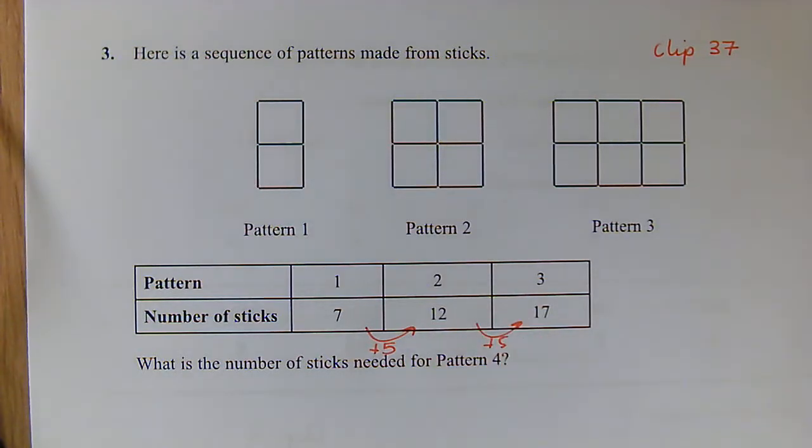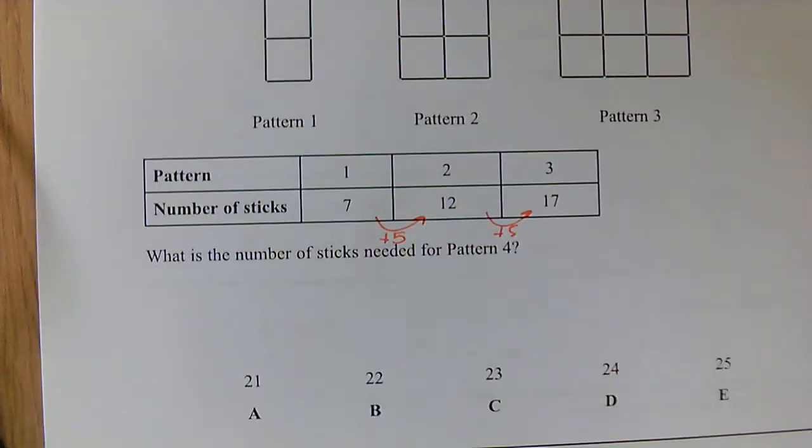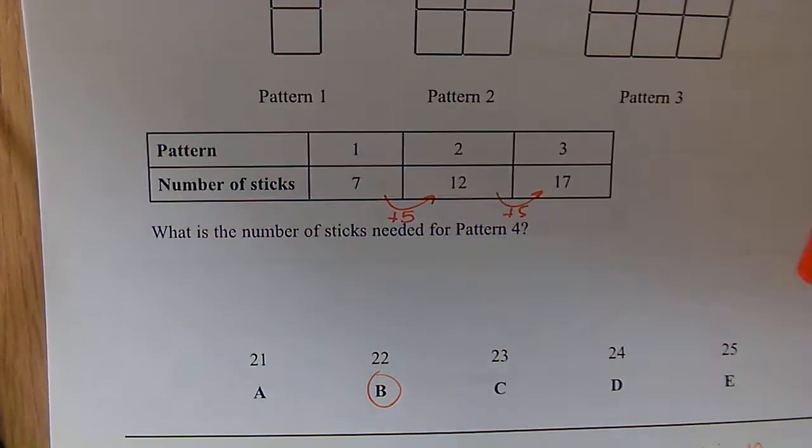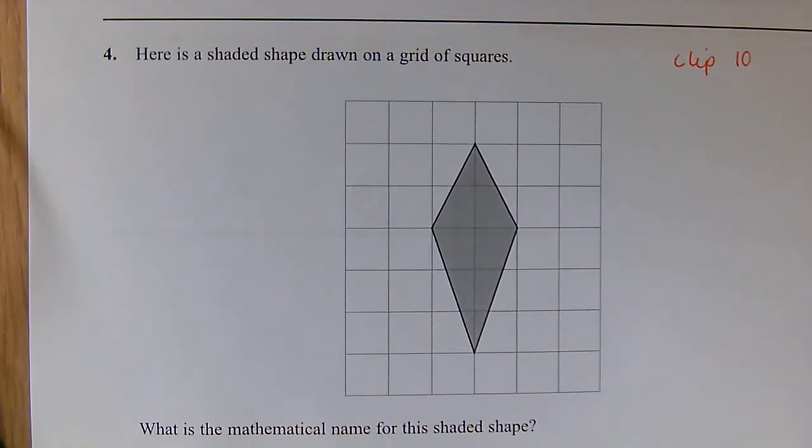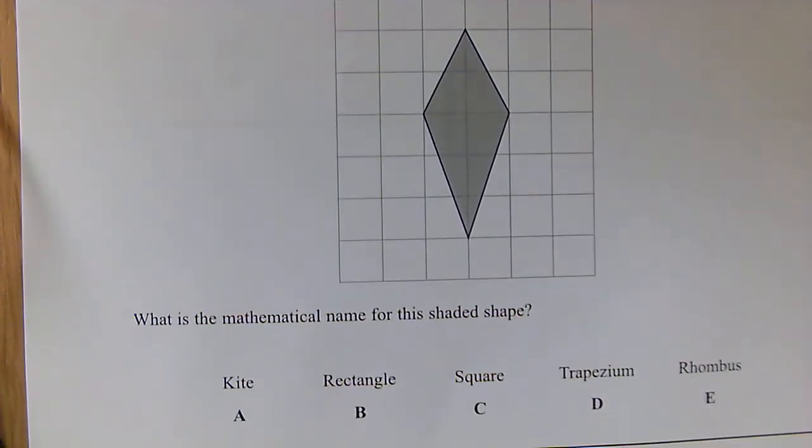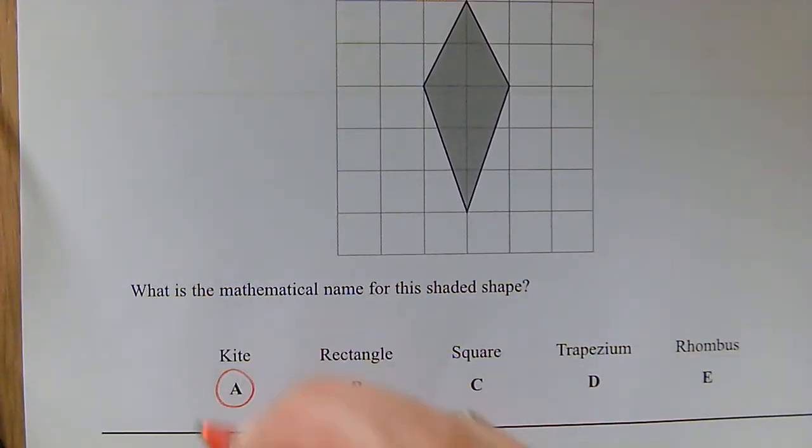Question 4: Here I have a shape drawn on a grid of squares. Want to know what the mathematical name of this shape is. This shape is a kite.